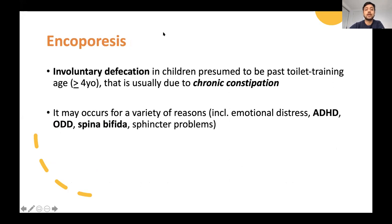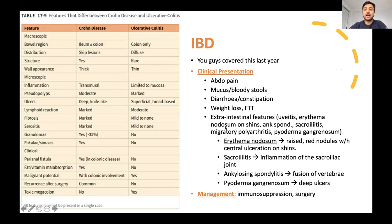Following on from constipation, encopresis is like bed wetting but they're pooping themselves. This could be for a variety of reasons like ADHD, oppositional defiant disorder, or neurological stuff like spina bifida. However, the most common cause is usually chronic constipation where you get this overflow incontinence. Lastly, IBD, I've just put this in for completion, cuts in your matrix. Important to know the clinical presentation differentiating between Crohn's and UC, as well as management: immunosuppressants like steroids, methotrexate, azathioprine, then surgery like resection of bowel.